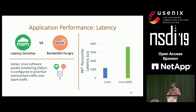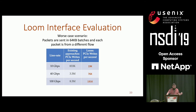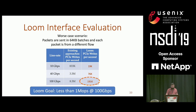For a latency-sensitive and bandwidth-sensitive application, default Linux Qdisk with packet scheduling still cannot ensure isolation due to the round-robin scheduler problem — Loom solves this. For interface efficiency, under worst-case scenario of sending new packets from different flows in 64 kilobyte batches, Linux generates over 8 million PCIe updates per second, while Loom produces only 191k updates per second, meeting our goal.